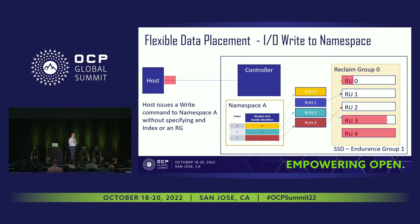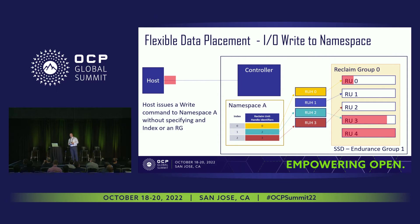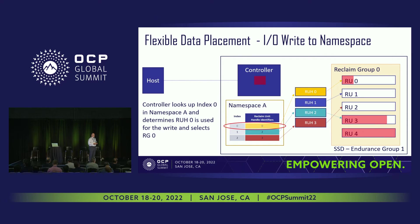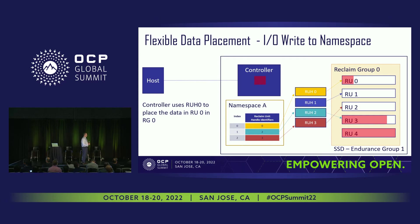For backwards compatibility: what if a drive that supports FDP is plugged into a server that doesn't support FDP? If a host writes without specifying an index or reclaim group — just a normal NVMe 2.0 write — we force entry zero to be the default used for the write. So the RUH is known, and we allow the controller to select the reclaim group, so they can distribute the writes and manage endurance across all the media. The write will go to reclaim group and RUH zero. That's the basics of how we do the placement.